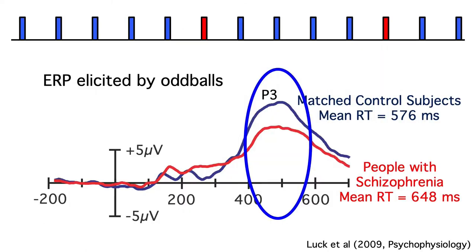But when you record ERPs in an oddball paradigm, the peak of the P3 wave for the oddballs doesn't appear to be any later in the schizophrenia group than in the control group. That's interesting — response times are slowed, but the latency of the P3 doesn't appear to be slow.